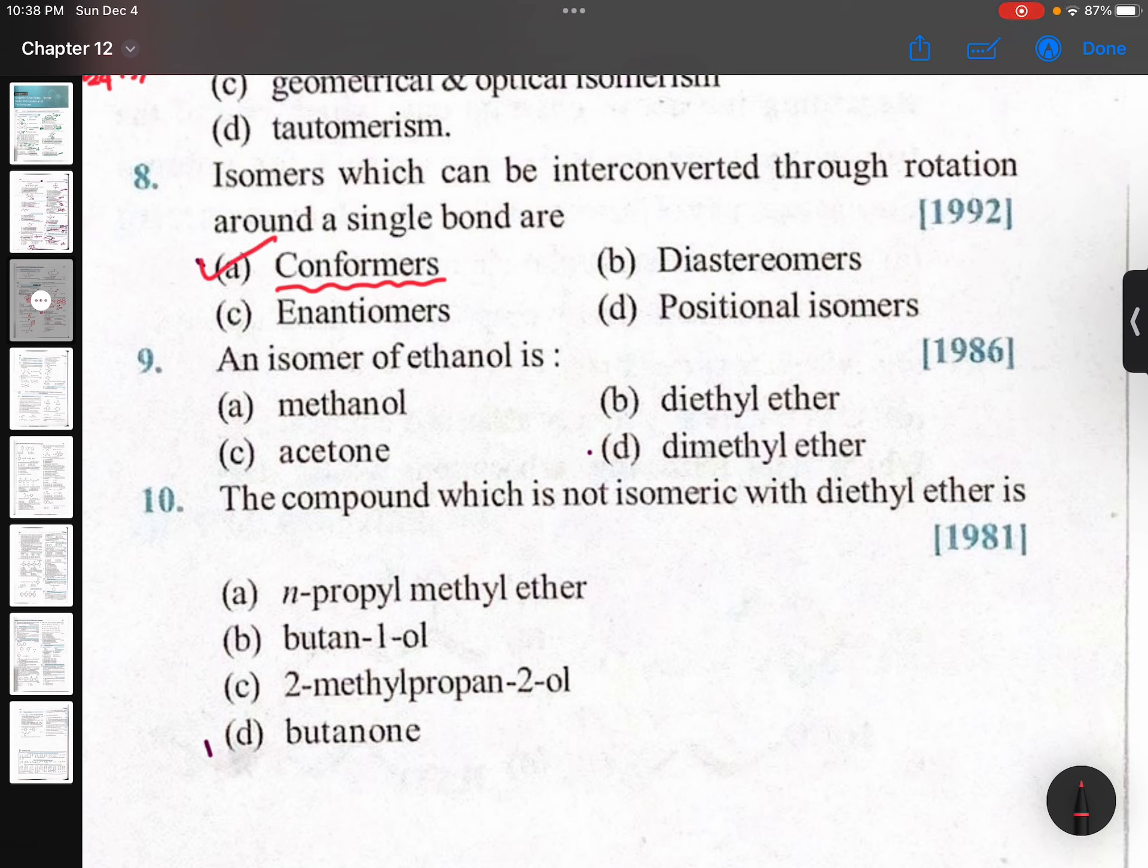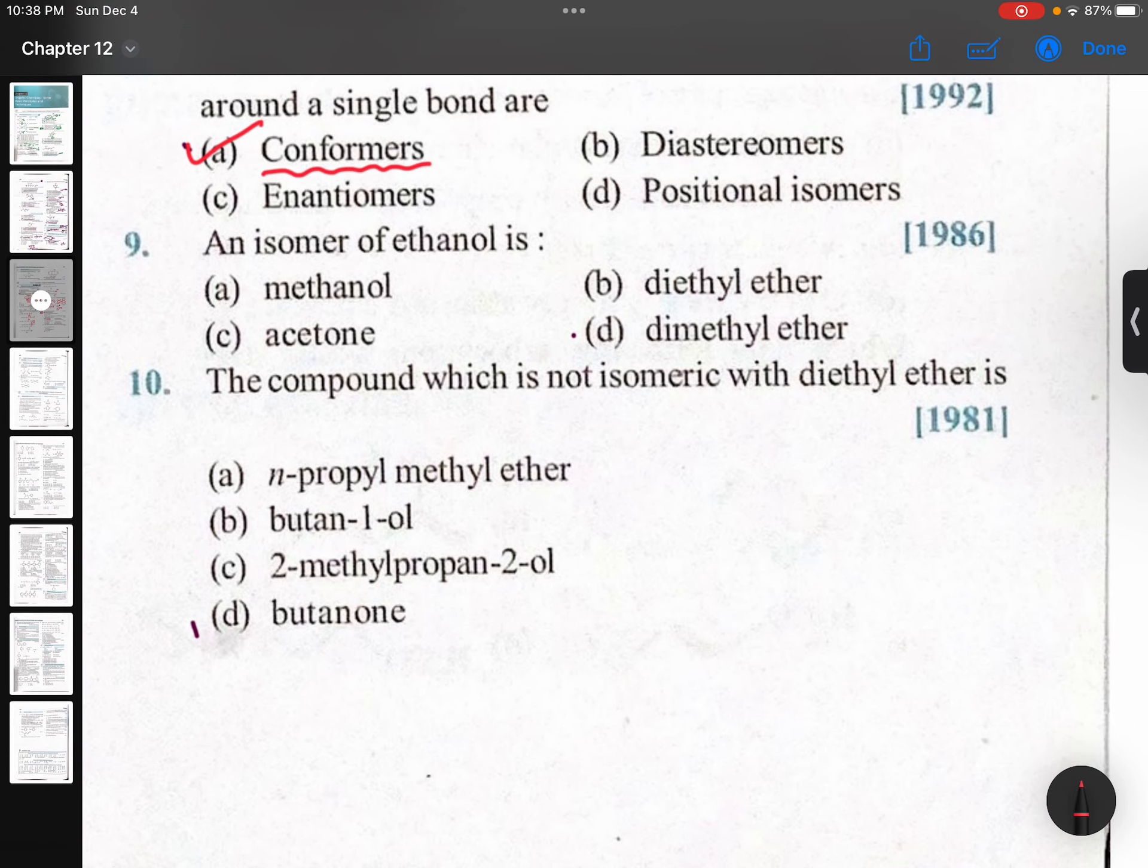An isomer of ethanol is ethanol, means CH3-CH2-OH. Its isomer will be CH3-O-CH3, that's dimethyl ether. But the question is 1986. 1986 means I was in class six, okay.